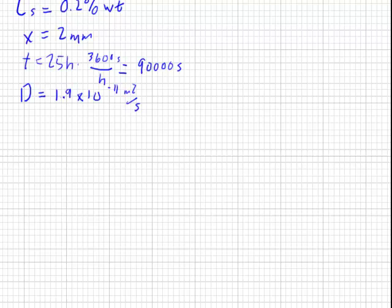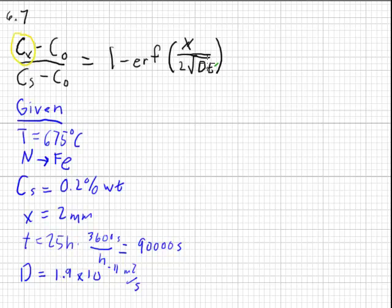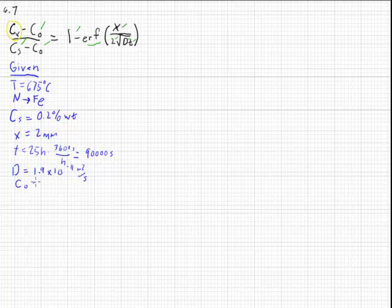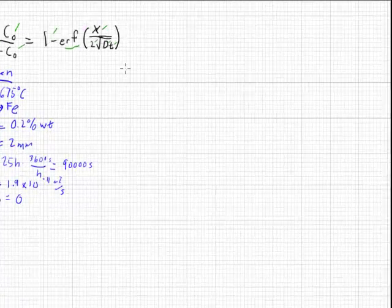We go through our equation. We've got the time, we've got the diffusion coefficient, we've got x. 2 is not a problem. We have our error function charts. 1 is not a problem. We have our concentration at the surface. What's not explicitly given is the concentration of nitrogen in the bulk of the material, but it is given that this is pure iron, which means it's 100% iron, which means it's 0% nitrogen. So that means we can write that C0 is 0, which makes things fairly easy to calculate.